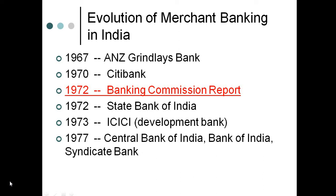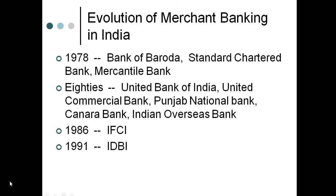Let's have a look at the evolution of Merchant Banking in India. It started way back in 1967 with ANZ Greenless Bank, followed by Citibank in 1970. Then in 1972, the Banking Commission report came, which mentioned that all commercial banks must get into Merchant Banking activity. So in 1972, State Bank of India started Merchant Banking activity, followed by ICICI, then Central Bank of India, Bank of India, Syndicate Bank, and like that it went on. Almost all banks today have a Merchant Banking division.